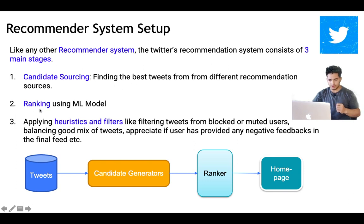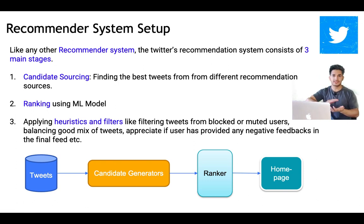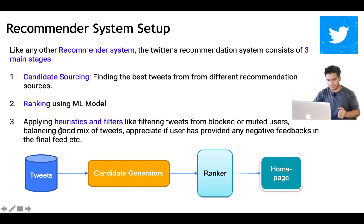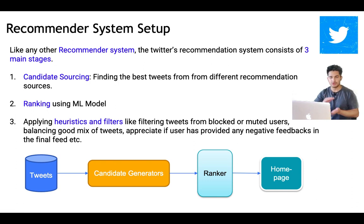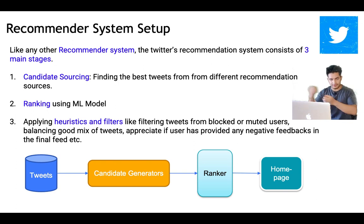Then followed by ranking, where an ML model ranks these tweets — determining the ordering in which they should be displayed to users on their home page. The third stage is applying heuristics and filters, like filtering tweets from blocked or muted users and balancing a good mix of tweets so the same type of content is not repeated — ensuring diversity in the home feed.